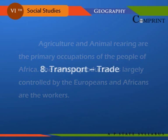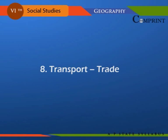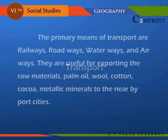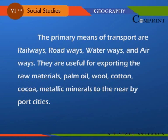The primary means of transport are railways, roadways, waterways, and airways. They are useful for exporting raw materials such as palm oil, wool, cotton, cocoa, coffee, and metallic minerals to nearby port cities.